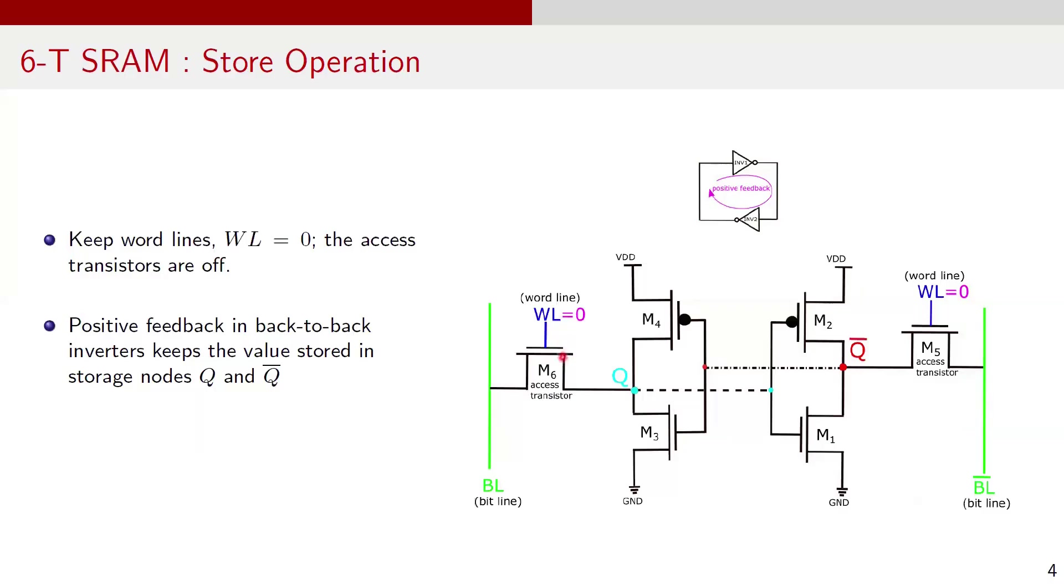This turns off the access transistors. This disconnection is crucial as it ensures the integrity and the correctness of the stored data in the SRAM cell. Meanwhile, the positive feedback mechanism in the back-to-back inverters maintain the stored value at the storage nodes Q and Q bar. This feedback loop is what makes SRAM cells stable and capable of holding data reliably.